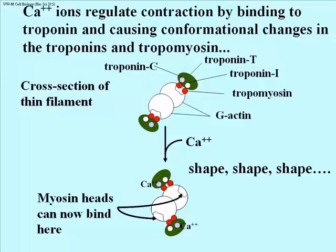During muscle contraction, you are sending nerve impulses to the neuromuscular junction and continually firing off action potentials which get propagated down the T-tubules to the sarcoplasmic reticulum, and calcium continues to bathe those myofibrils. When you no longer wish to contract that skeletal muscle, you stop sending the nerve impulses, the calcium is retrieved back into the sarcoplasmic reticulum by a calcium pump, and the calcium no longer bathes the actin. The tropomyosin and troponins resume their position, occluding the myosin binding sites, and the muscle relaxes.